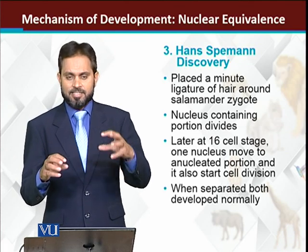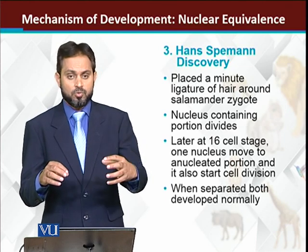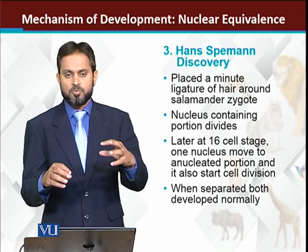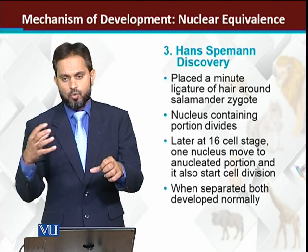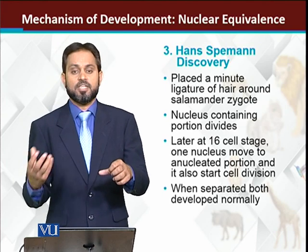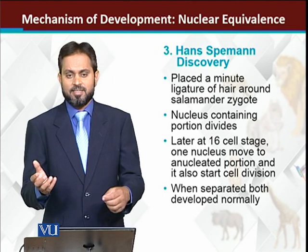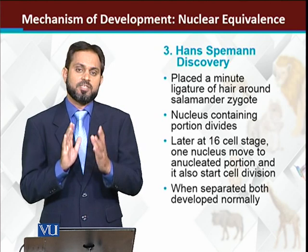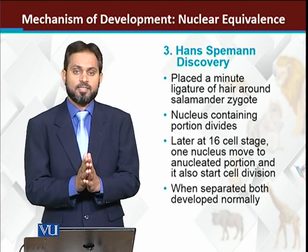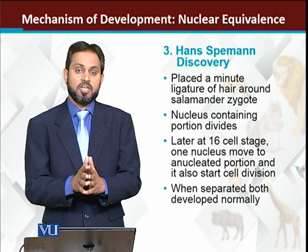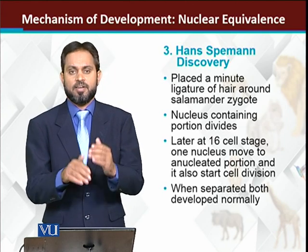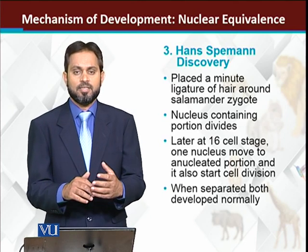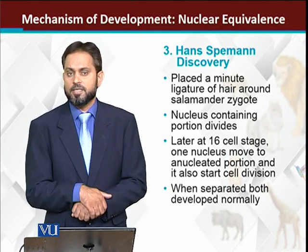He observed that when the half where cell division was occurring — where the nucleus was present — reached the 16-cell stage, one nucleus escaped and moved to the side that had no nucleus (the anucleated side). This showed that the nucleus is involved: wherever the nucleus is present, development will occur; wherever there is no nucleus, development will not occur.